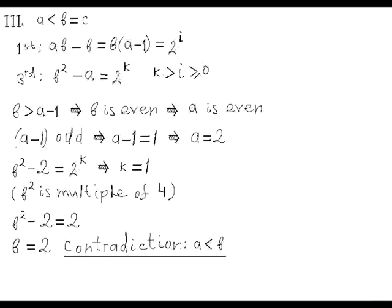The third case is similar to the second case, but two numbers, for example B and C, are equal, and the third number A is less than B and C. Then the first and second equations can be written as one equation, AB minus B equals some power of 2, which can be factored into B times A minus 1 equals the same power of 2. And the third equation can be written as B squared minus A equals some power of 2. Note that the value of exponent k is greater than the value of exponent i. It's easy to prove if you simply take the given inequality A is less than B and multiply both sides by B and subtract A from both sides. Hence, you'll get that B squared minus A is greater than AB minus A, which is greater than AB minus B. Hence, 2 to k is greater than 1, and therefore it's even. Let's remember this fact.